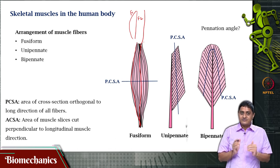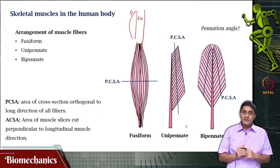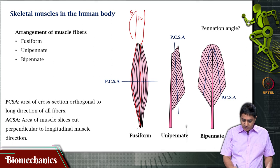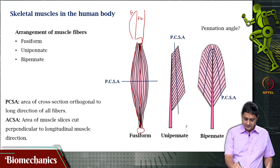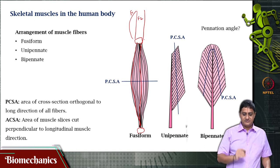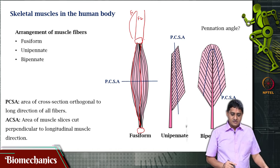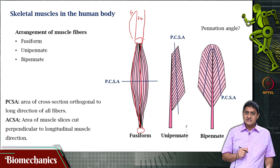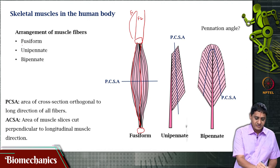Depending on the arrangement of the fiber and where the particular fiber is located, its length may vary. Note that its attachment to the bones happens through tendons at each end — there are only two tendons. So all the force is transmitted through these tendons serially. This is the case of the spindle-shaped muscle, or the fusiform muscle.